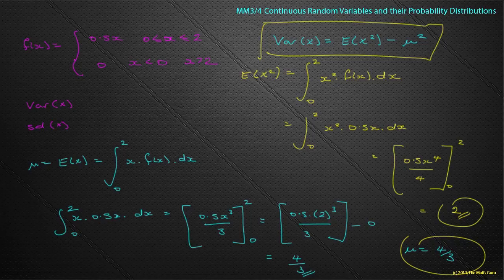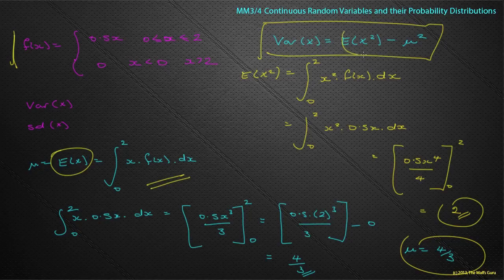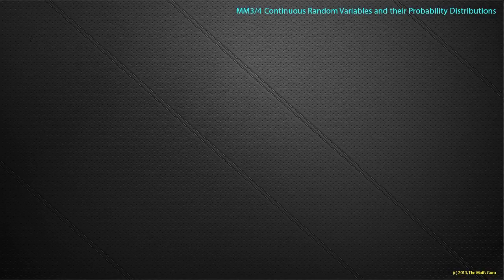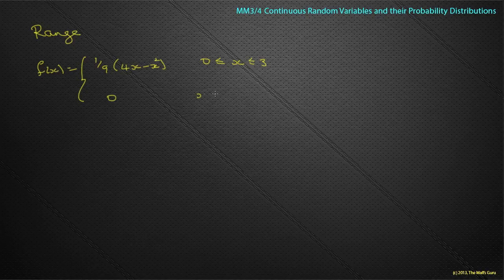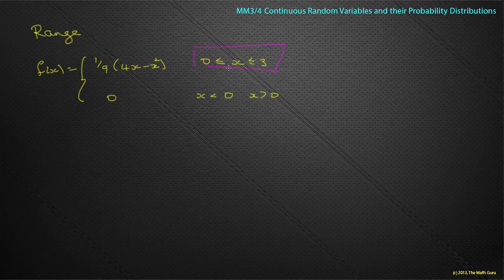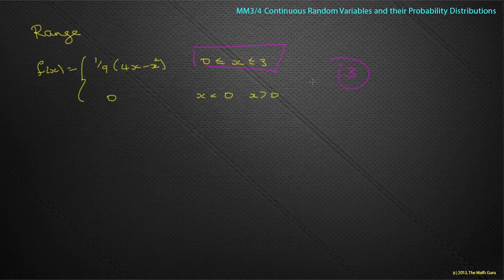Remember to have your function ready and know how to use the expectation and E(X²) formulas to find μ. Moving on to something easier — range. If f(x) is defined between 0 and 3, range is simply the biggest value minus the smallest, so the range is just 3. Quick and easy.